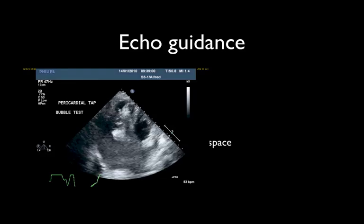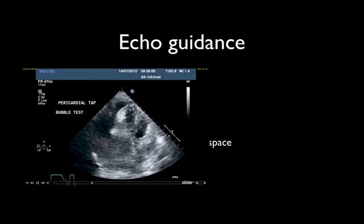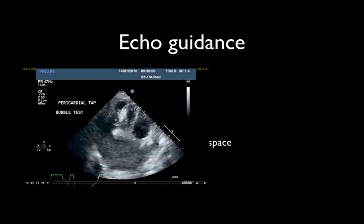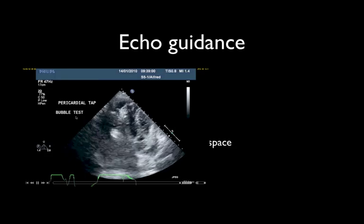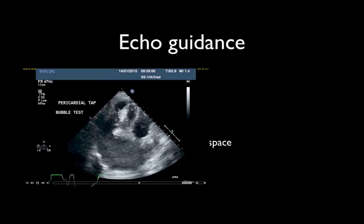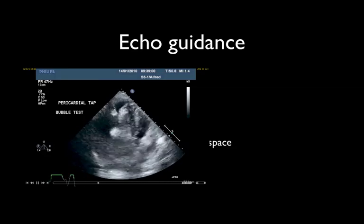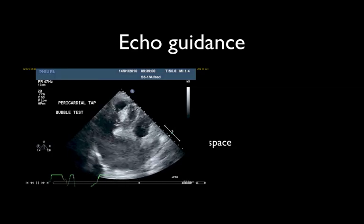A safer approach uses an apical four-chamber image with the needle coming in from a subxiphoid approach, but now echo is used to confirm placement of the needle within the pericardium. A bubble test is performed — the injection of approximately 2 mils of agitated saline with suspended micro-bubbles into the pericardial space. This lights up as a bright speckled reflector of ultrasound, clearly seen in the pericardial space, indicating it's safe to aspirate from that position.